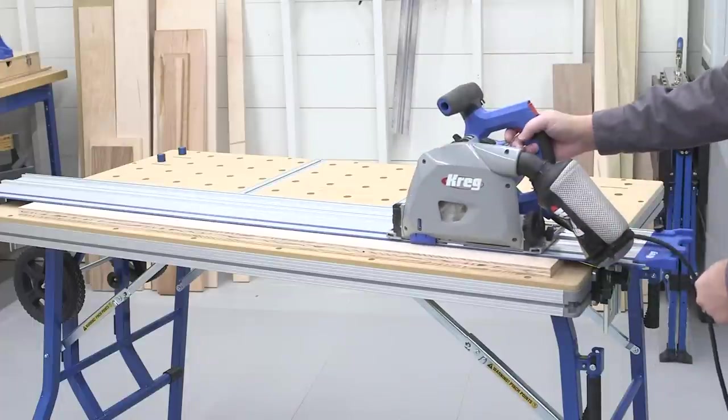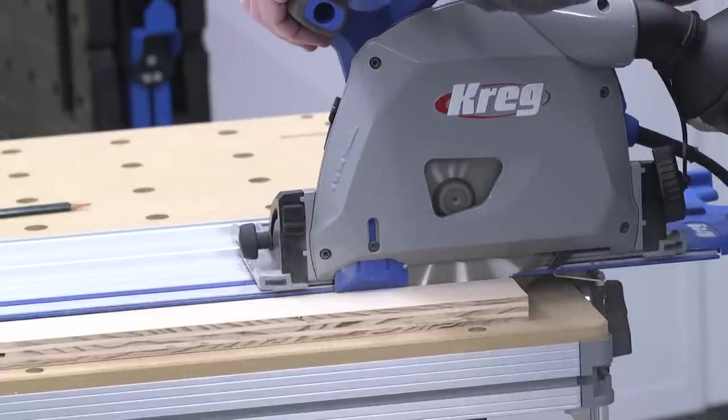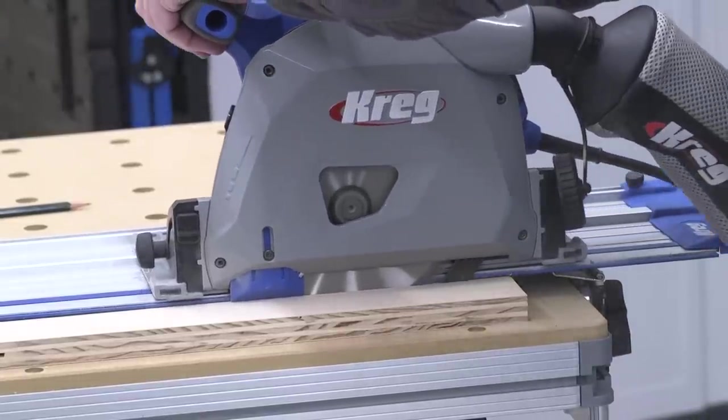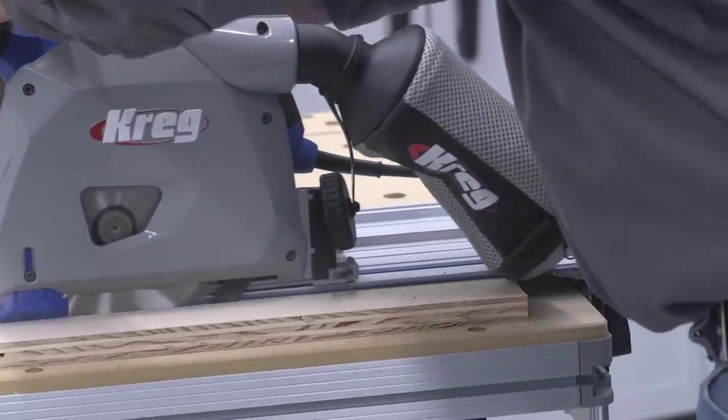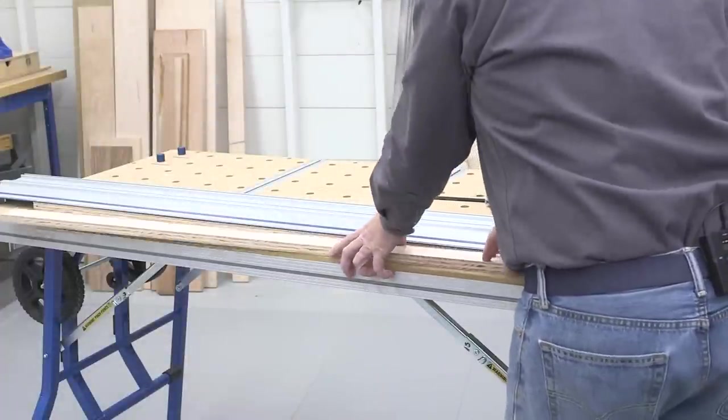Place the saw on the track, lock in the anti-kickback, and you can make the cut. You can see here how the splinter guard rides against the wood, and how the riving knife follows the saw blade. With the kerf cut, you can remove the cutoff piece and the plywood.